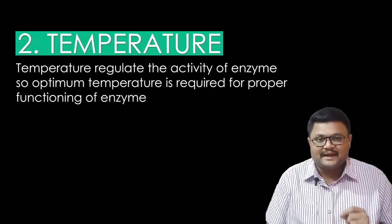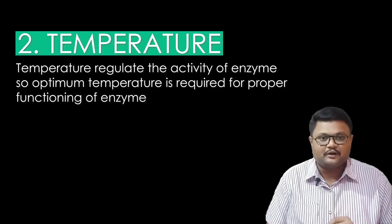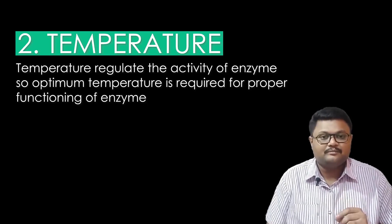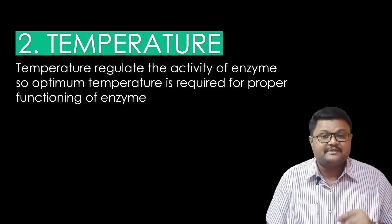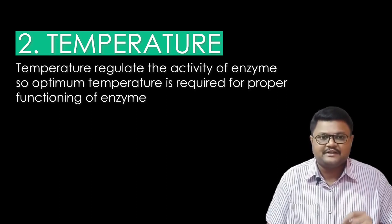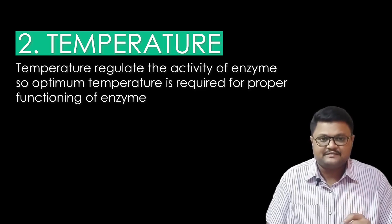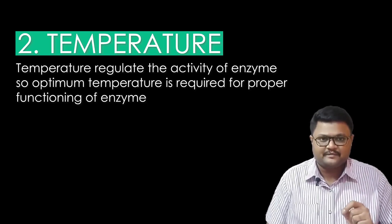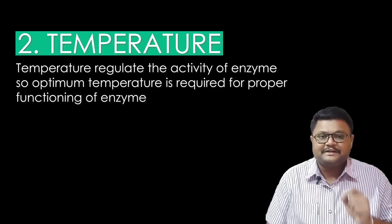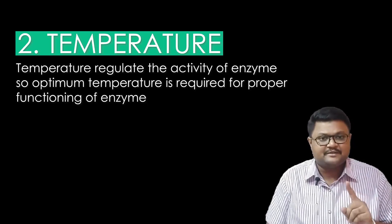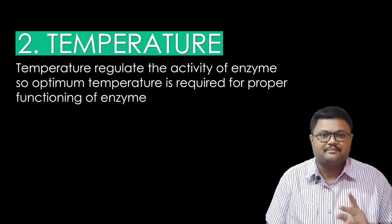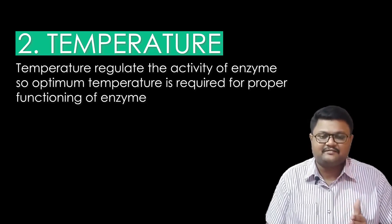Point three is temperature. Temperature is important for the basic metabolic activity of plants and any organism. Enzymes are very sensitive: if temperature is too low they do not perform well, and if temperature is too high their activity also decreases. Enzymes need a specific optimum temperature at which their activity is highest. That is called the optimal temperature.